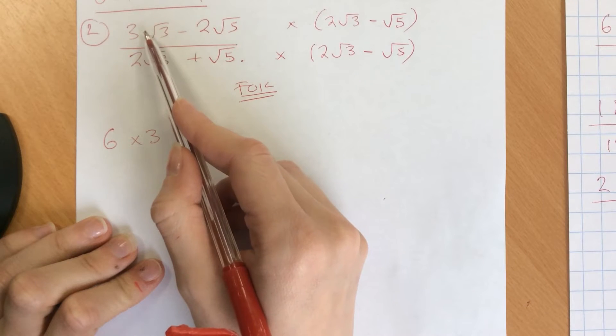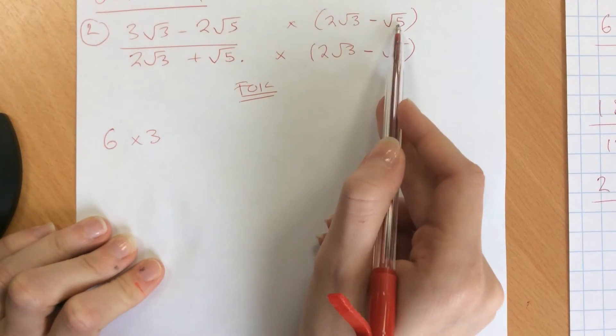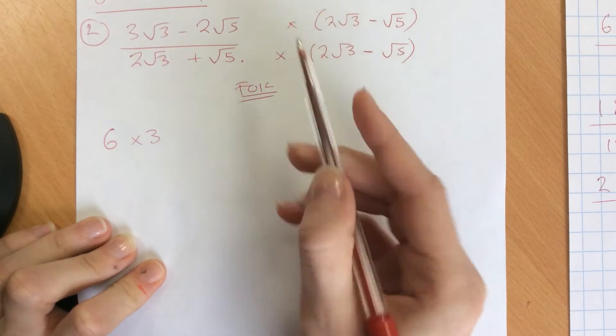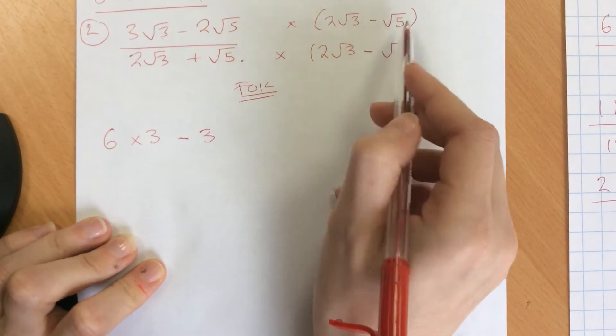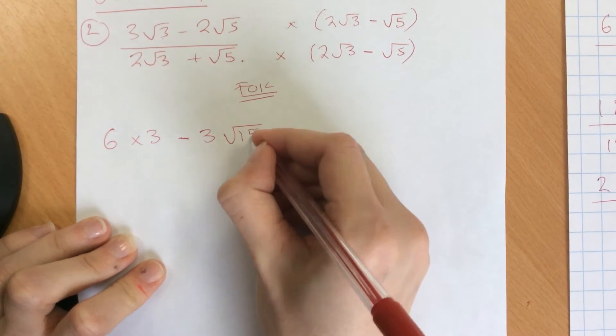Then we're going to do the outside, so 3 root 3 times by minus root 5. So we end up with minus 3. Root 3 times root 5 gives us root 15.